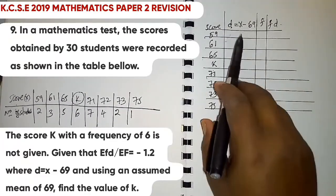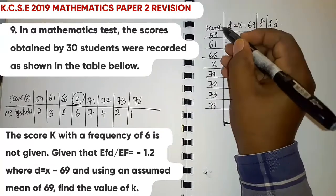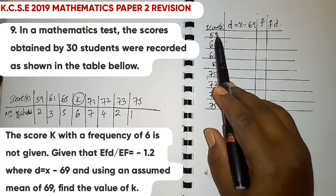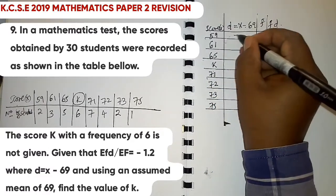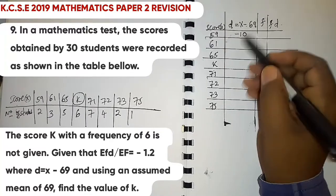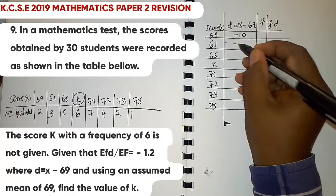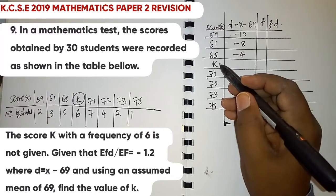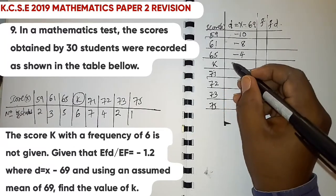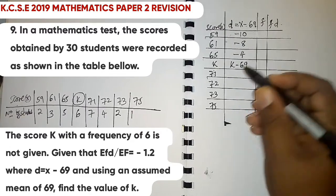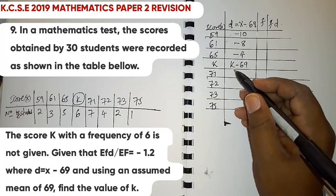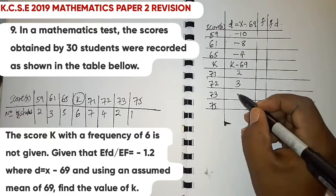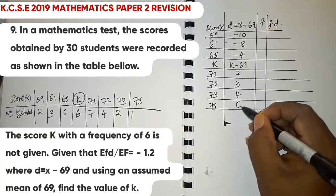Computing d = x - 69 for each score: 59 - 69 = -10; 61 - 69 = -8; 65 - 69 = -4; k - 69 = (k - 69); 71 - 69 = 2; 72 - 69 = 3; 73 - 69 = 4; 75 - 69 = 6.